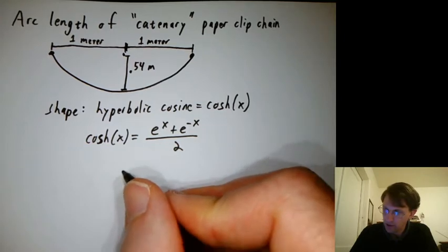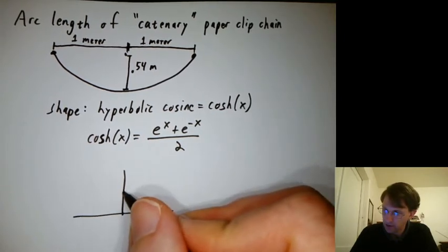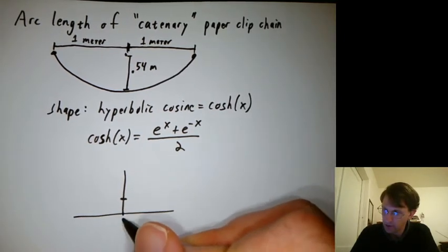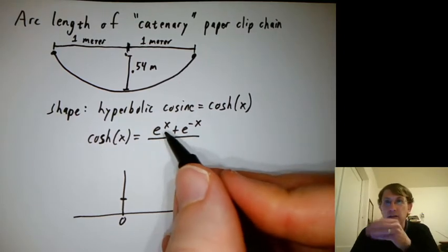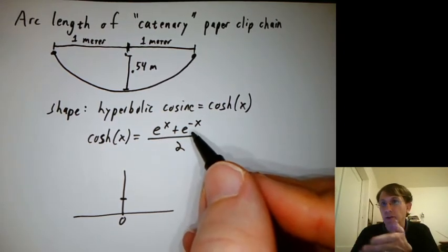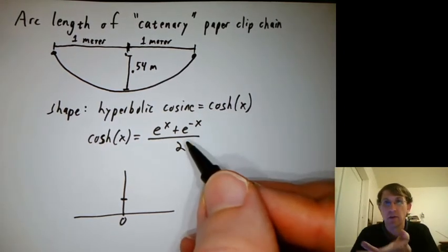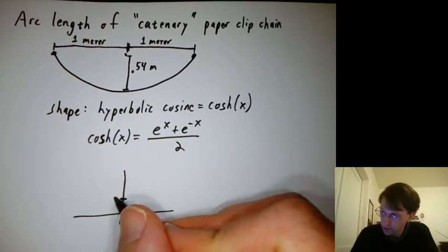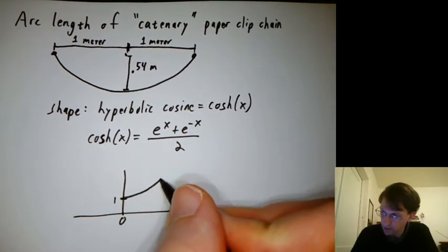But if you graph cosh, what do you get when you plug in 0? e to the 0 is 1, e to the negative 0 is 1. Add them together, you get 2. Divide by 2, you get 1. So it starts here, and it goes like that.